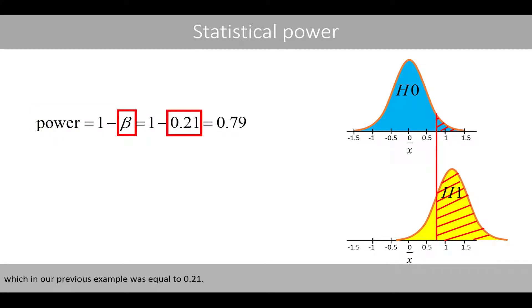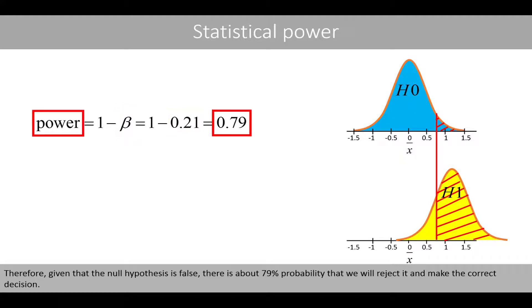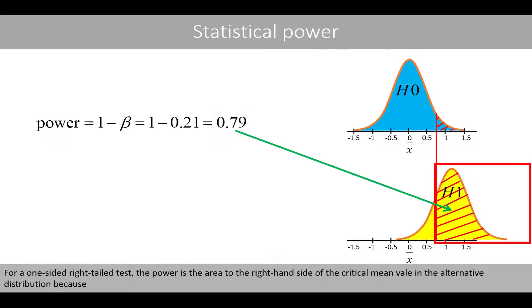In our previous example, beta was equal to 0.21. Therefore, given that the null hypothesis is false, there is about 79% probability that we will reject it and make the correct decision. For a one-sided right-tailed test, the power is the area to the right-hand side of the critical mean value in the alternative distribution.